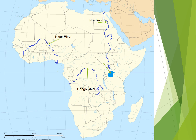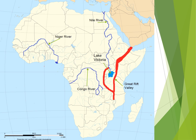Where the Nile River starts is Lake Victoria. Next, we have the Great Rift Valley. It flows around Lake Victoria. Next, we have Mount Kilimanjaro.